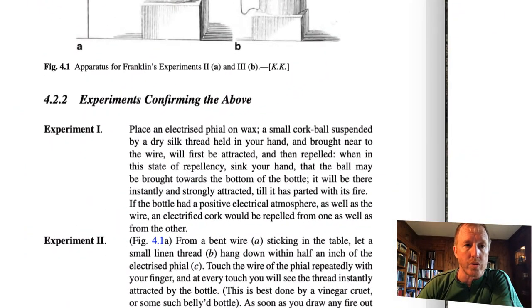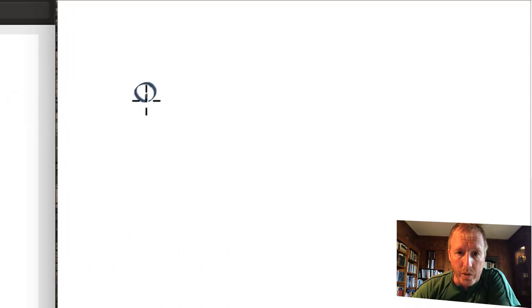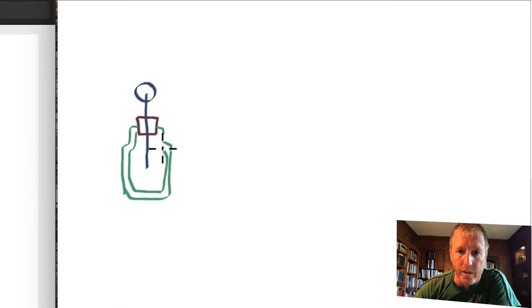We began this in our last lecture by talking about experiment number one, which is on page 46. Let me remind you what that experiment was about. So he imagined taking a Muchenbroeck bottle, which consists of a metal sphere attached to a wire. This is fixed through a cork, an insulating cork, and it's put into a glass jar like this. He put water in the glass jar. So I put water in it like this.